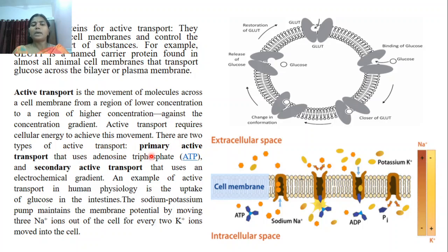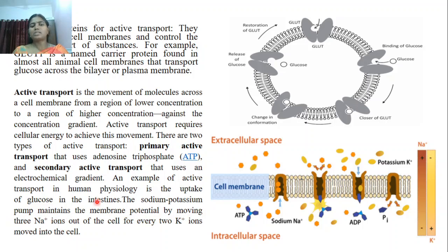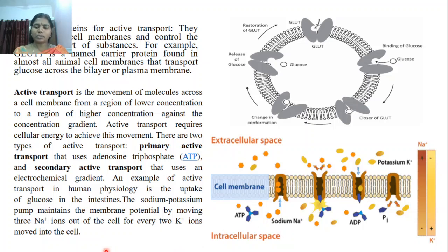There are two types of active transport: primary active transport, which utilizes ATP (adenosine triphosphate), and secondary active transport, which uses an electrochemical gradient. An example of active transport in human physiology is the uptake of glucose in the intestine. The sodium-potassium pump in neural cells maintains membrane potential by moving sodium ions outside the cell and potassium ions inside the cell, using ATP converted into ADP.